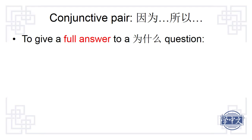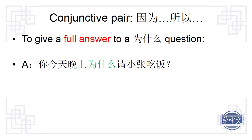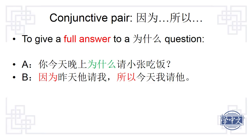When we give a full answer to a 为什么 question, we should use the conjunctive pair yinwei and suoyi. Look at this short dialogue: 你今天晚上为什么请小张吃饭? (Why did you take 小张 out to eat this evening?) Reply: 因为昨天他请我,所以今天我请他。 (Because he took me out yesterday, I took him out today.)